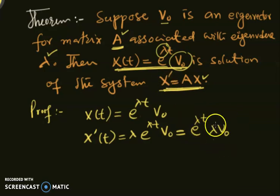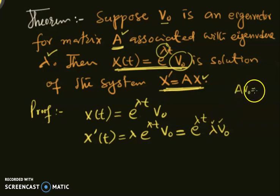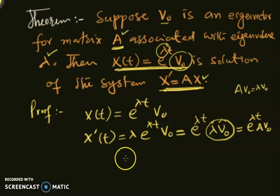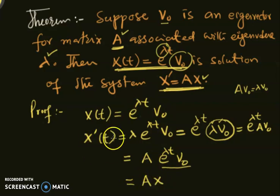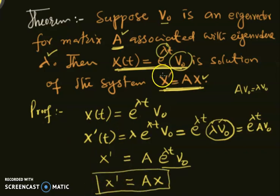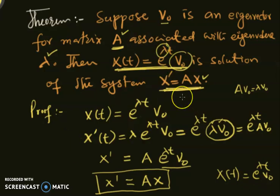Since lambda and v0 are eigenvalue and eigenvector, we know A·v0 = lambda·v0. So I can replace lambda·v0 with A·v0, giving e^(lambda·t) · A·v0. I can then factor this as A · (e^(lambda·t) · v0), which is just A·x. So x' = A·x, which means x(t) = e^(lambda·t) · v0 is indeed the solution to the system x' = Ax.